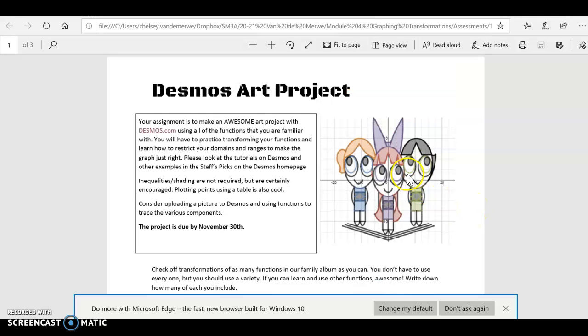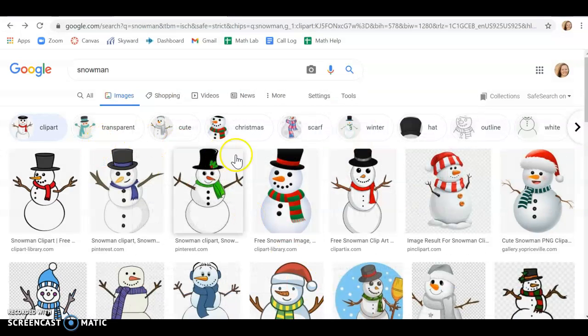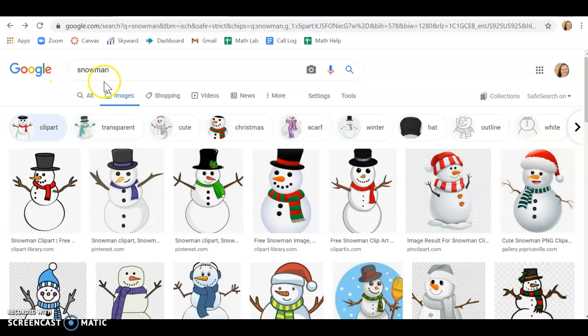So basically what you're going to do, your first step is to decide what picture you want to create. Like here the person in this picture created the Powerpuff Girls. So what I would do is I'd say okay I want to make a snowman or something like that. And then just google a picture of a snowman. Choose which one you like.